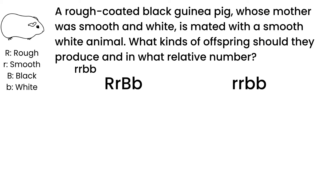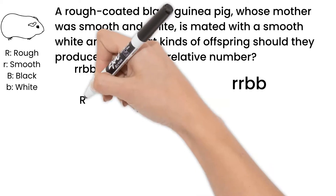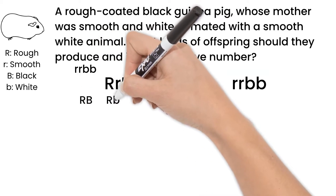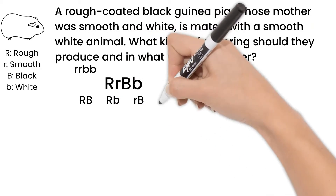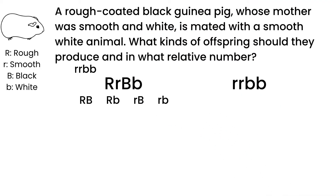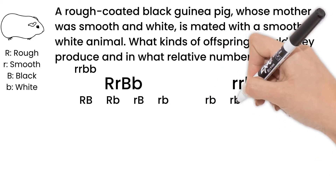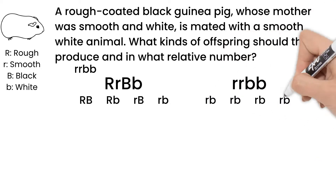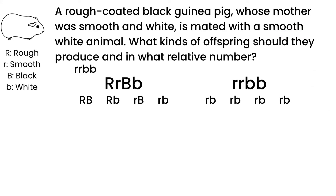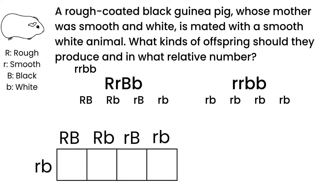First, we'll determine our possible gametes for each guinea pig. The homozygous recessive guinea pig has gametes that are all lowercase r lowercase b. Since all possible gametes would have the same alleles, we can just use one if you are comfortable with dihybrid crosses.